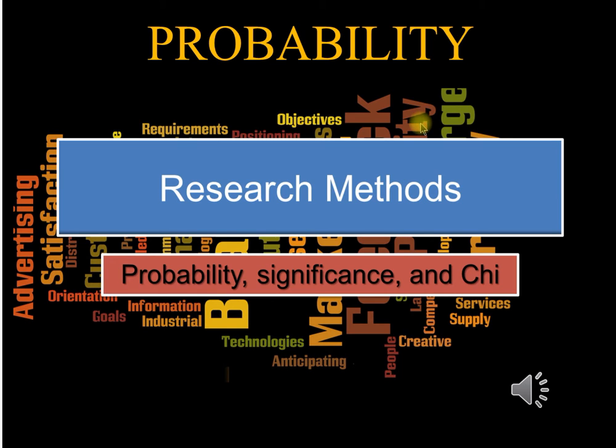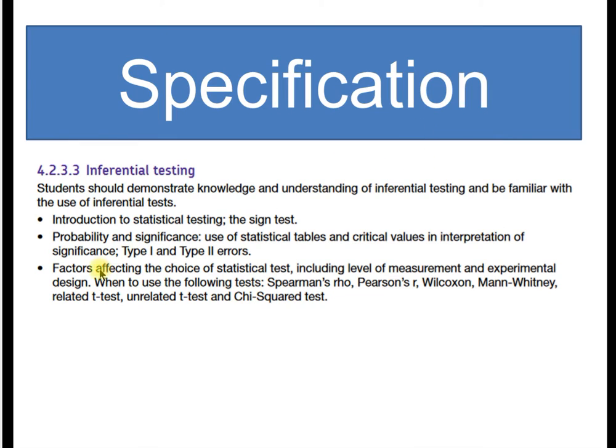Hello, and welcome to Probability, Significance, and Chi-Squared. In today's session, we're going to look at the crucial concept of probability, significance, the errors that can occur in statistical testing, and we're going to carry out our first Chi-Squared test.